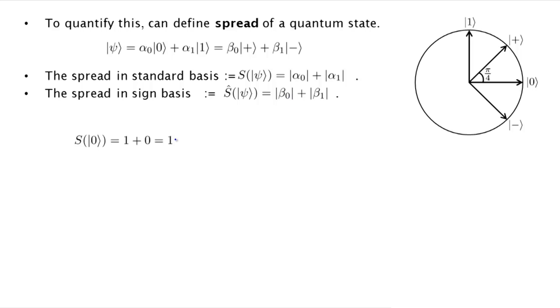So why did we define spread this way? When we know the bit value perfectly, the spread is 1 because we'll get either alpha 0 equal to 1 and alpha 1 equal to 0 or vice versa; in either case the spread is 1. On the other hand, in the case that we don't know the bit value at all, the worst case is if we have the state plus, in which case we really don't know the bit value at all. Then the alpha 0 and alpha 1 are both 1 over square root 2, so the spread is square root 2. So the claim is that the only way the spread can be small, that it can be 1, is if you know the bit perfectly. And the farther from 1 it is, the more uncertain, the less certain you are about the bit value. The same thing holds for the spread in the plus minus basis. So plus and minus have spread 1 and anything else has larger spread. And in this time 0 and 1 have maximal spread of square root 2.